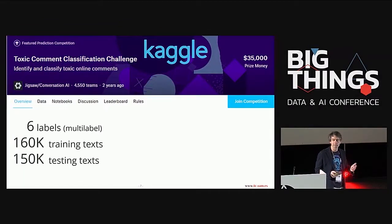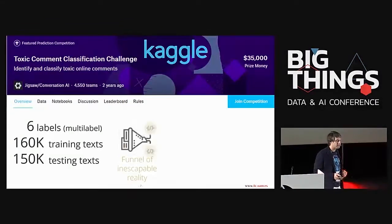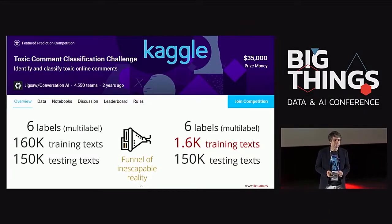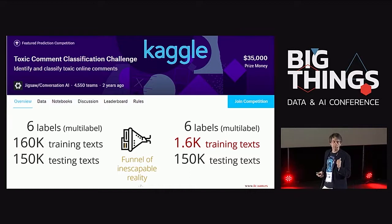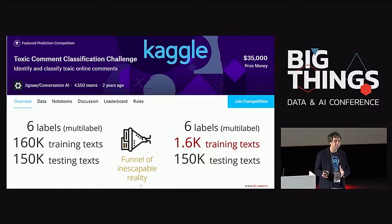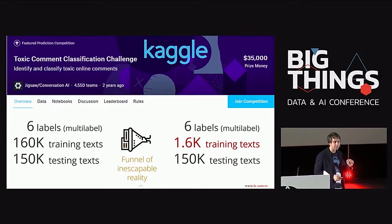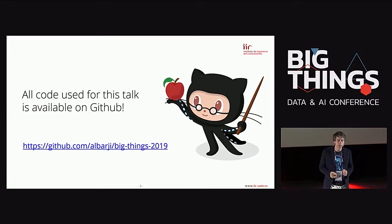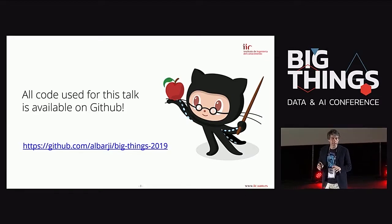So instead of working with the full dataset, we apply a real-world filter: we only use 1,600 training data points. That's a more reasonable size for a real-world problem. I'll still keep the whole test data to show that the methods generalize well enough, using it only to measure accuracy. All the code used for this talk is publicly available on GitHub.